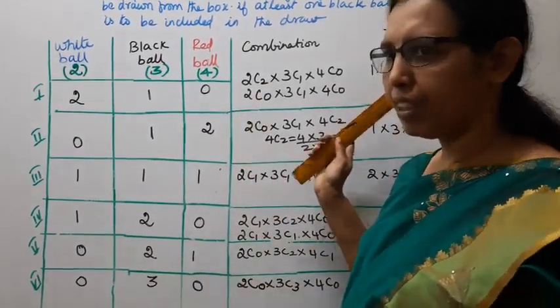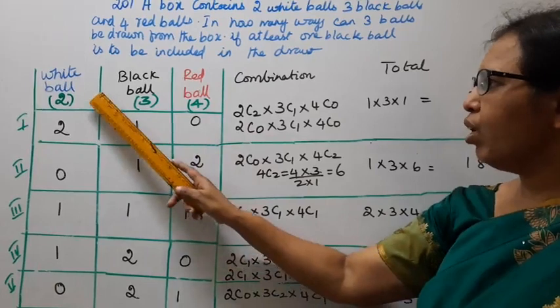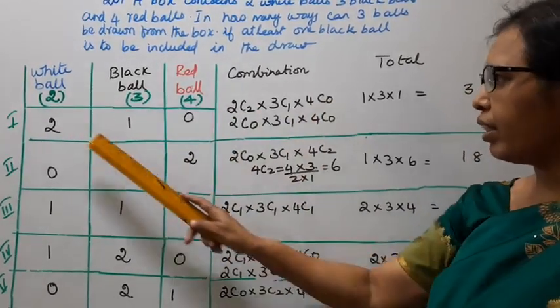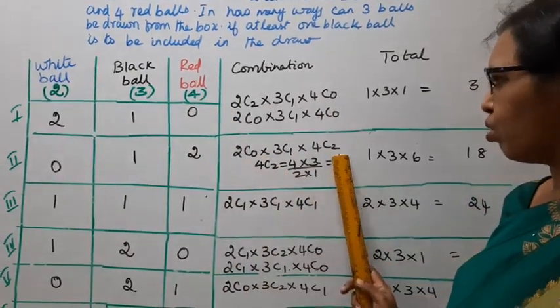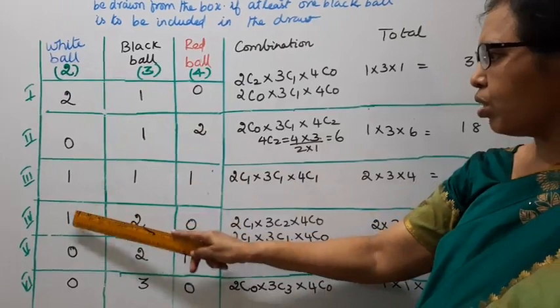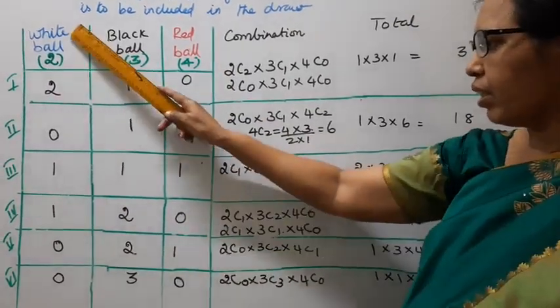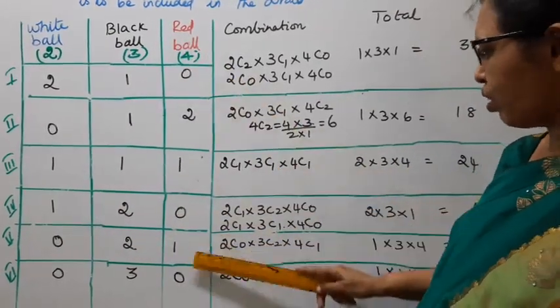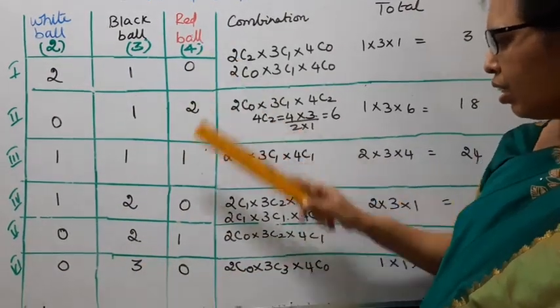The combinations are: 2C2×3C1×4C0, 2C0×3C1×4C2, 2C1×3C1×4C1, 2C1×3C2×4C0, 2C0×3C2×4C1, and 2C0×3C3×4C0.